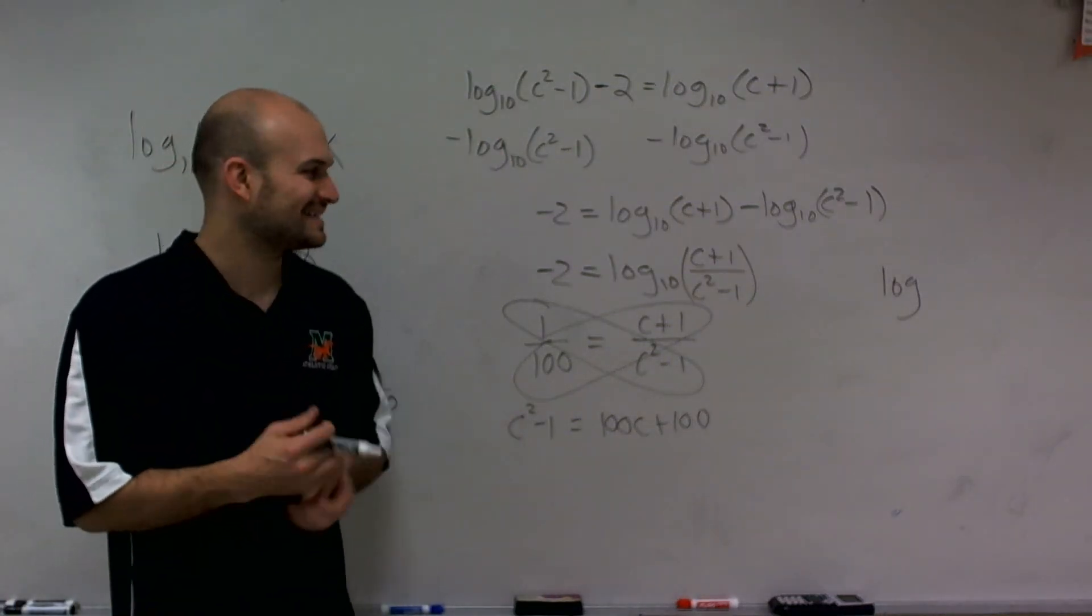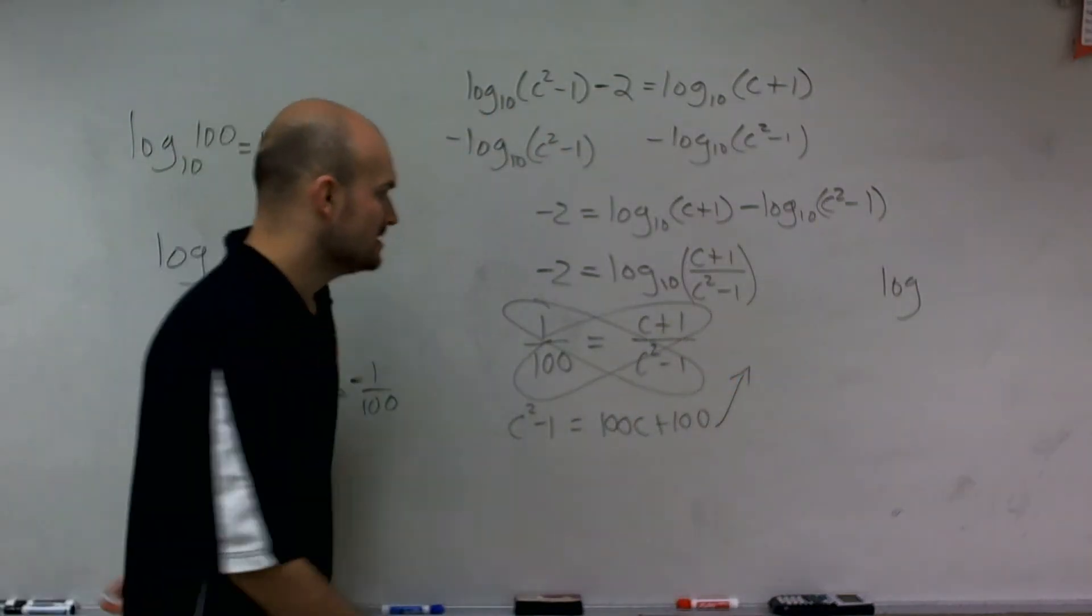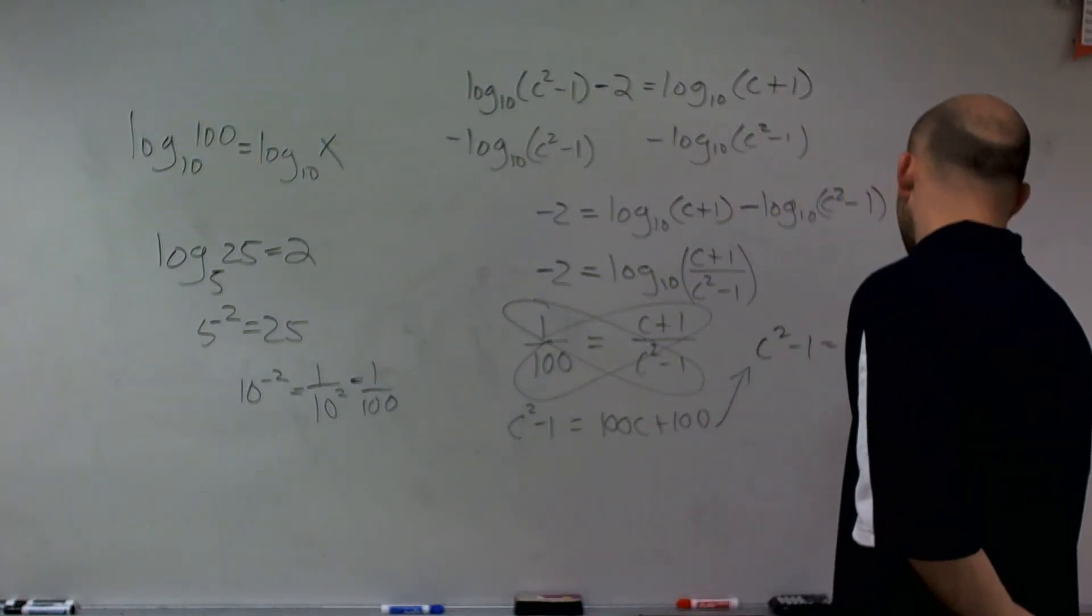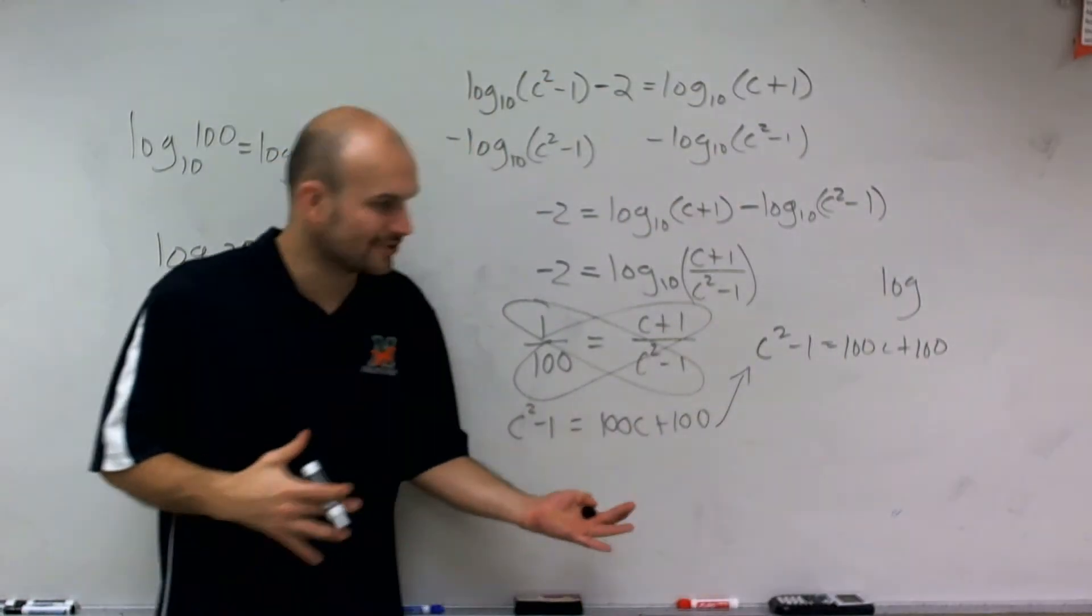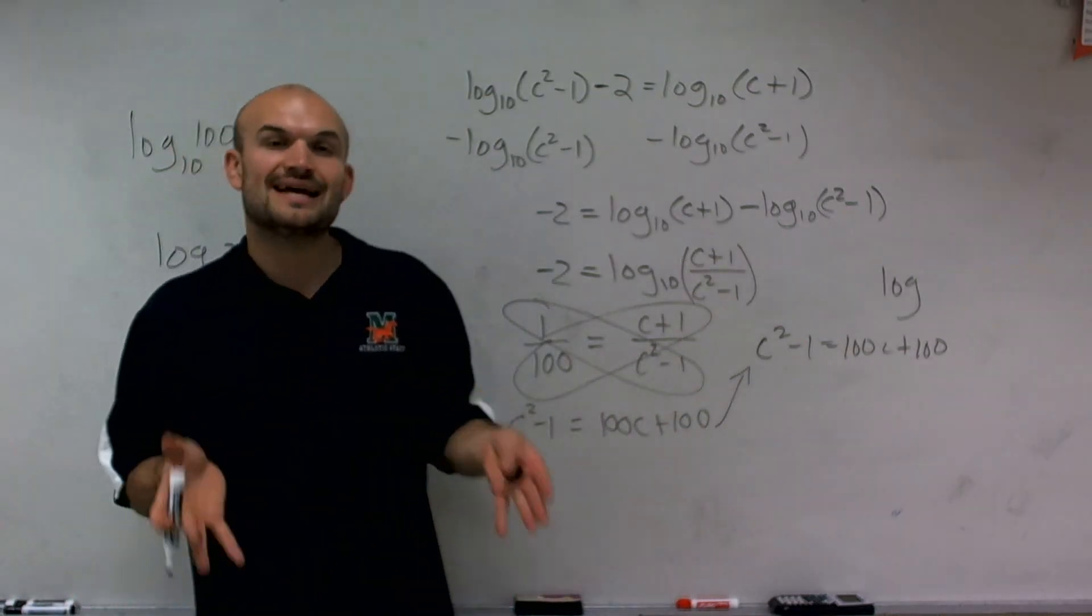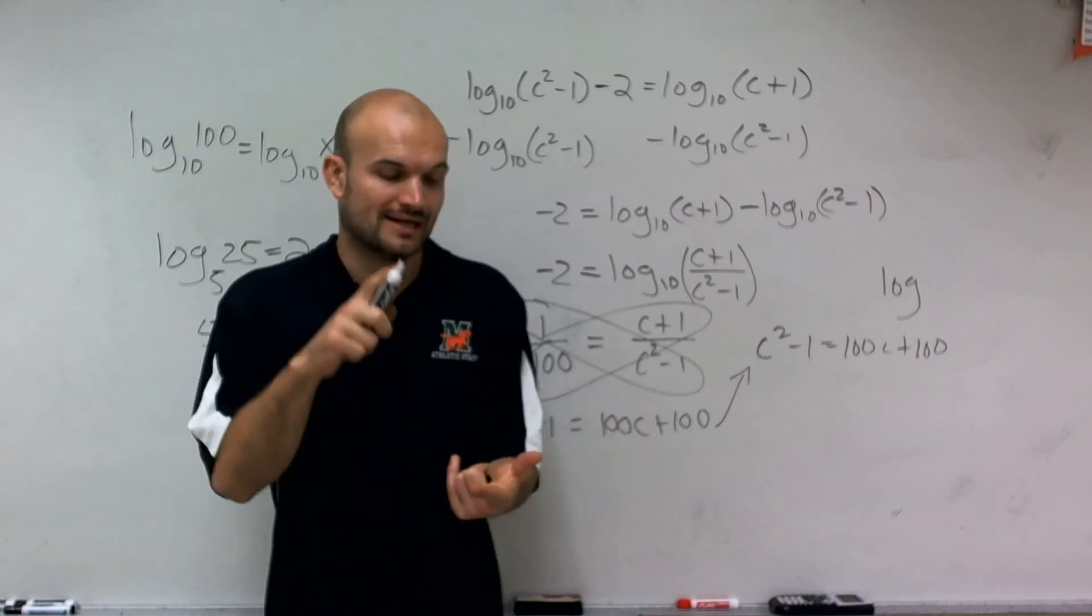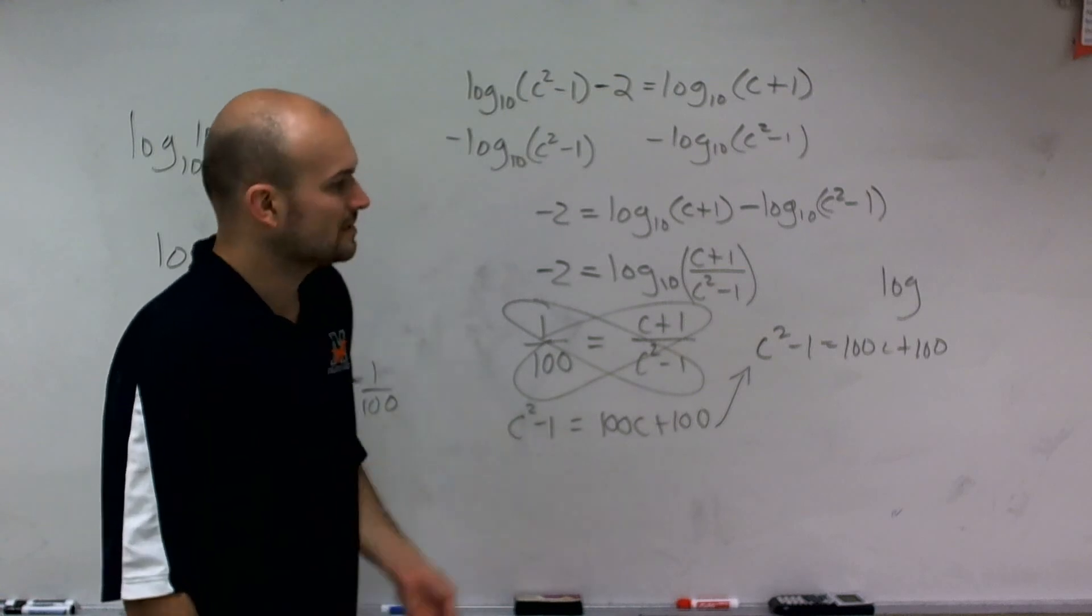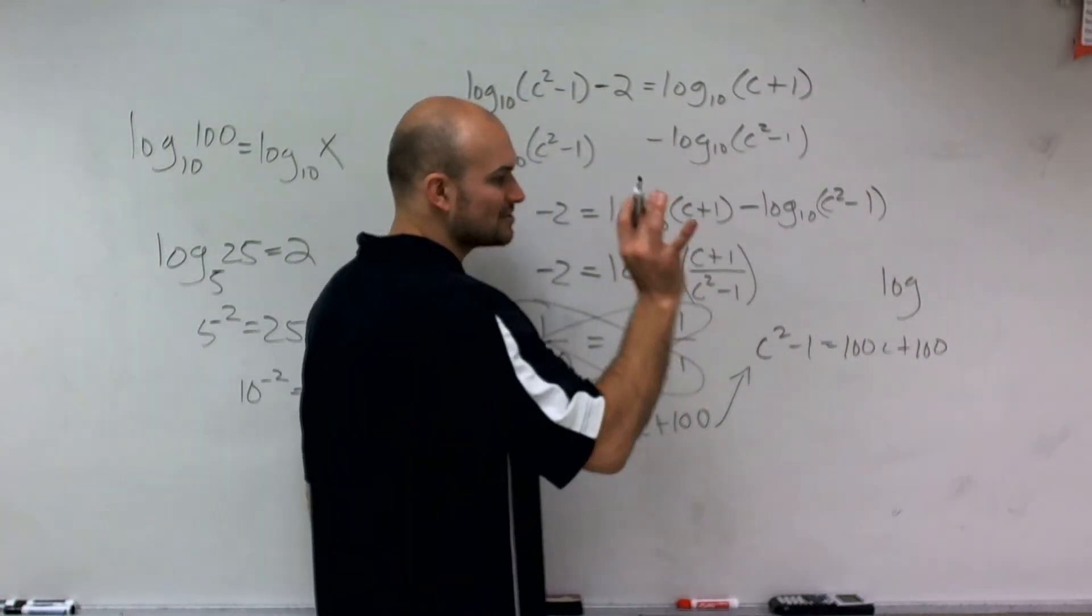So I'm going to finish this problem over here. I have c squared minus 1 equals 100c plus 100. Now, when solving quadratics, we're not isolating one single variable. Quadratics, we want to set them equal to 0 to put them in our standard form. Once they're in our standard form, we can either apply the quadratic formula, we can try to see if we can factor it, or we can complete the square. So in this case, the first thing I need to do is get all my values to one side so it's set equal to 0.